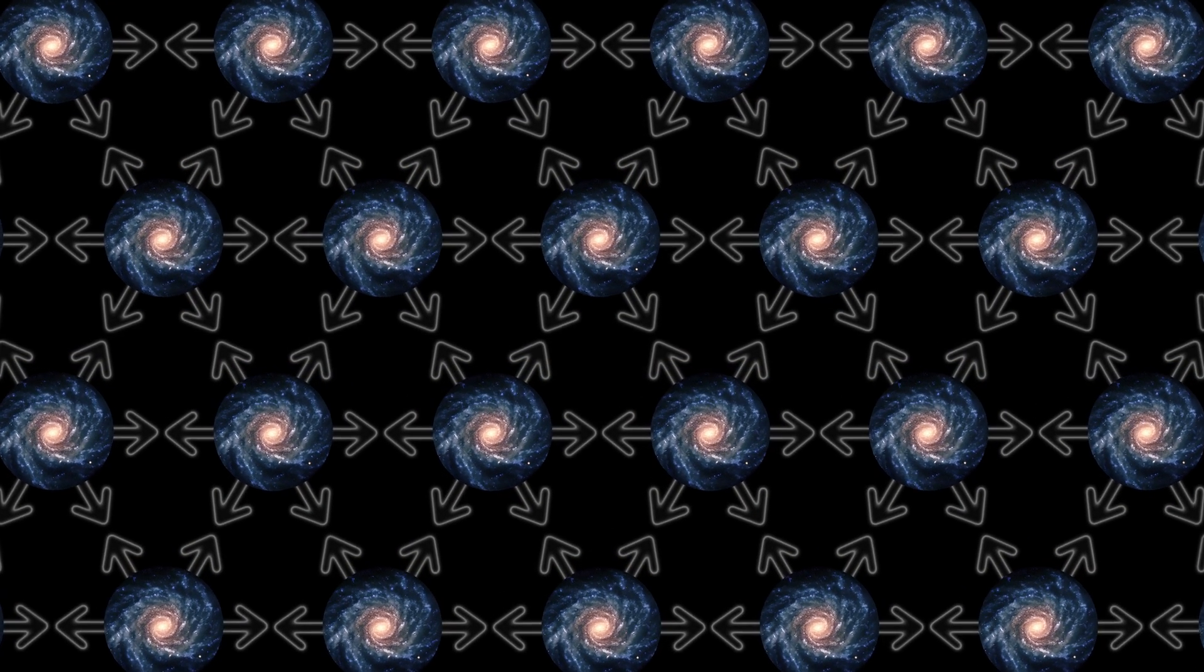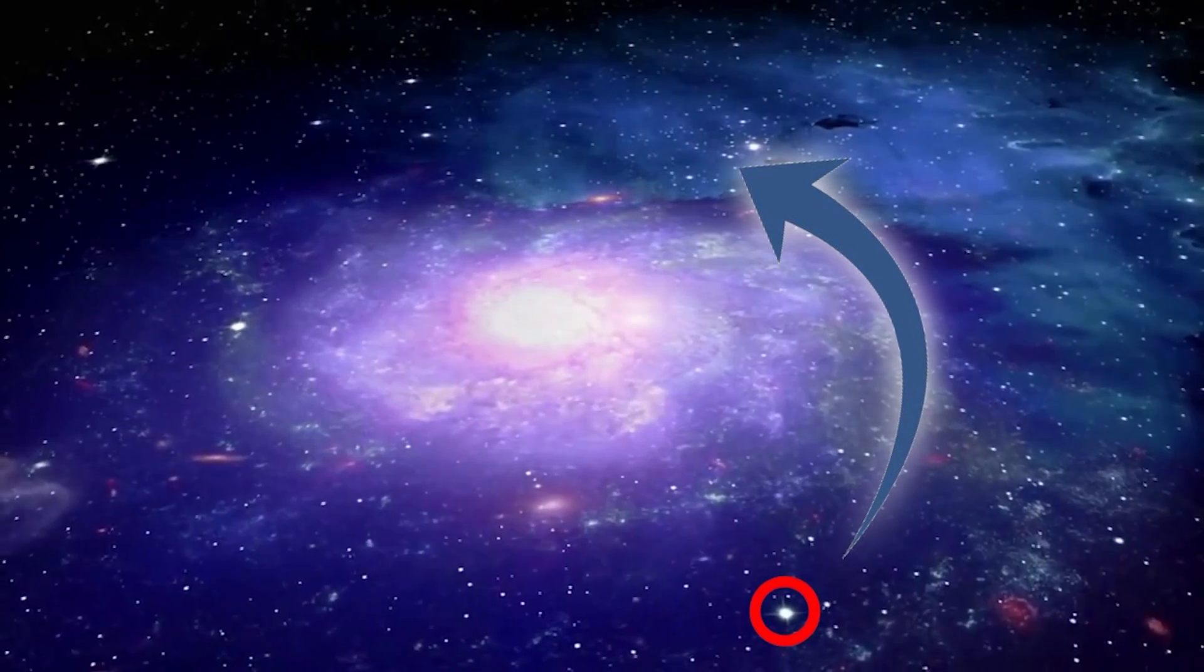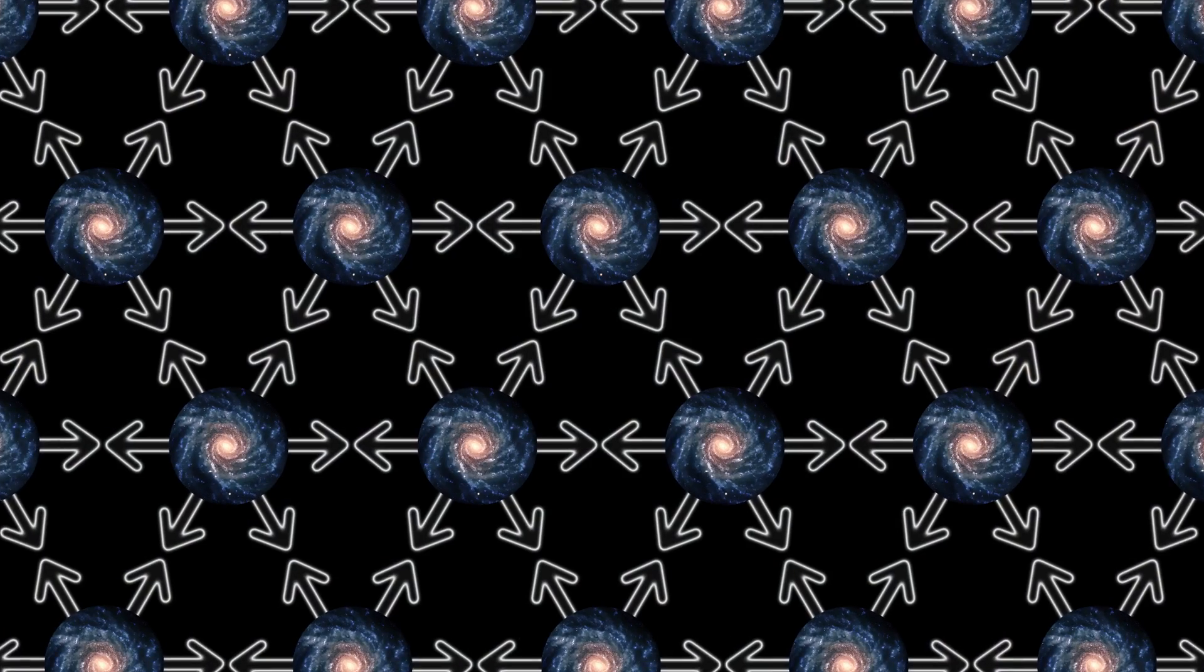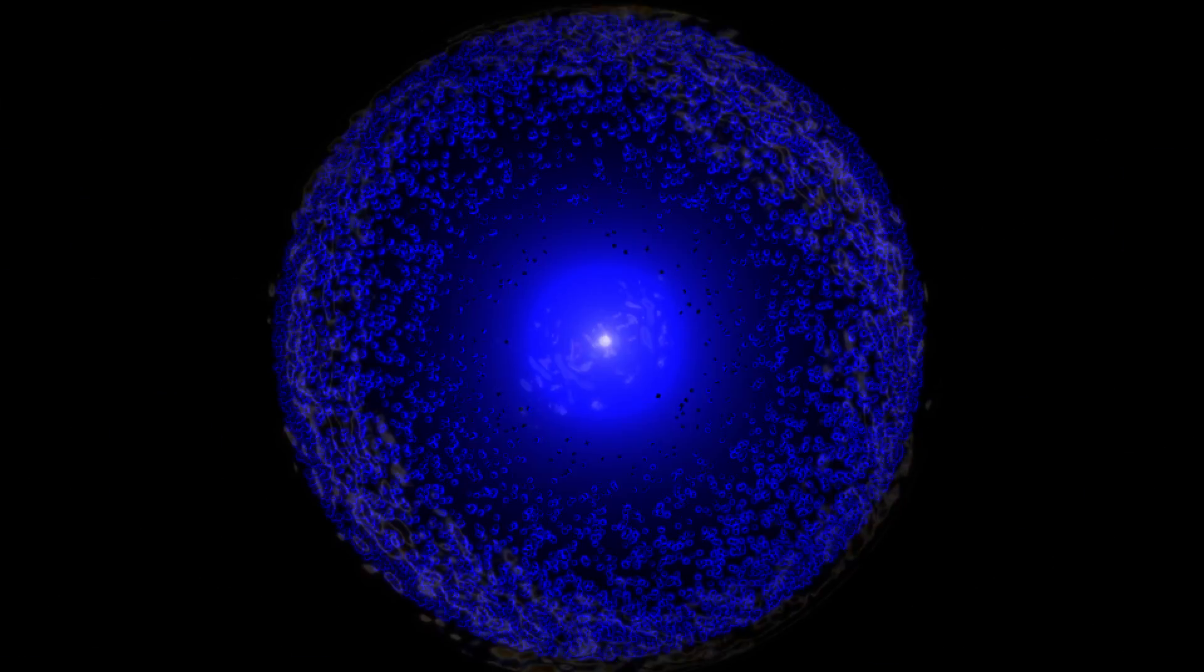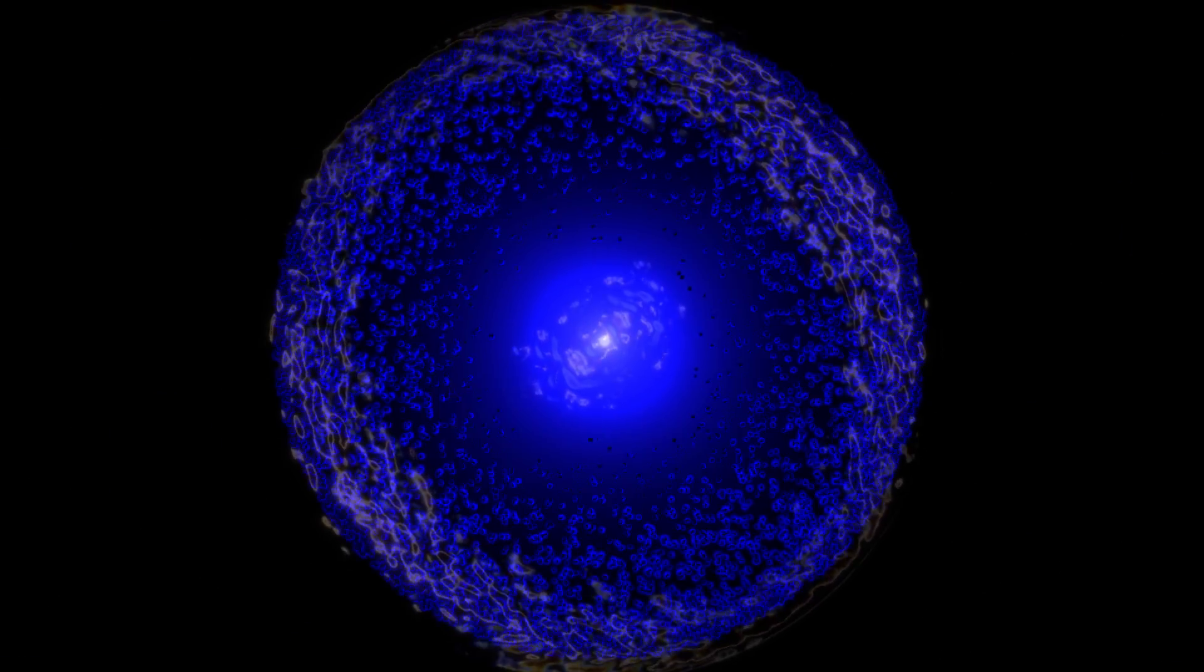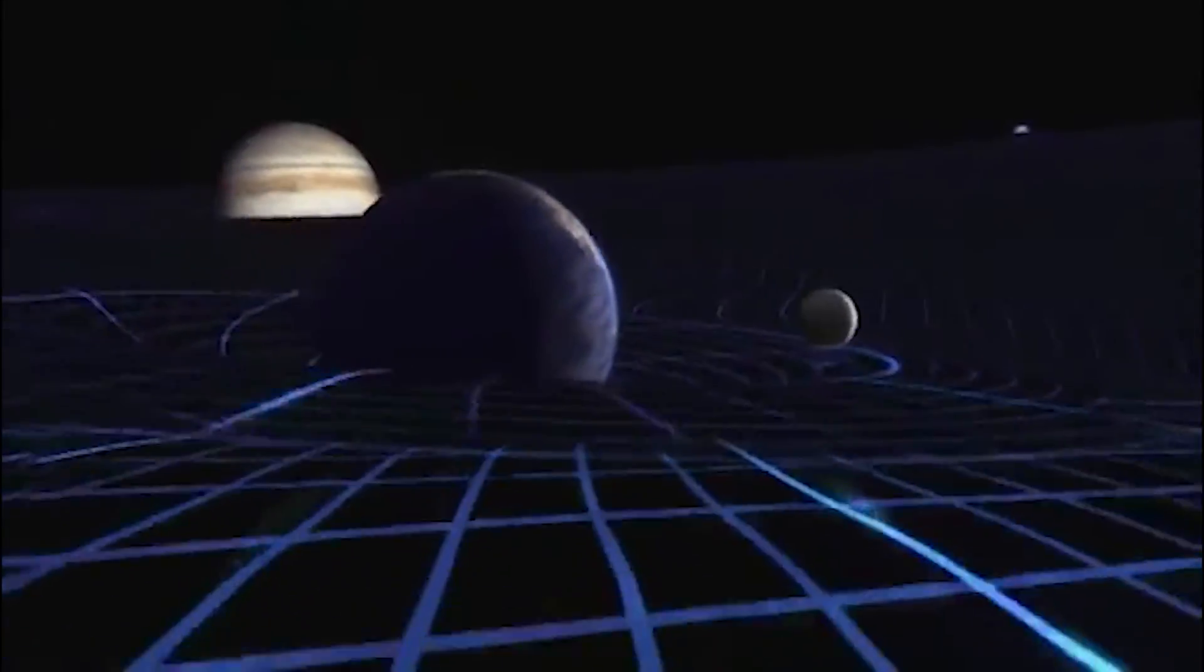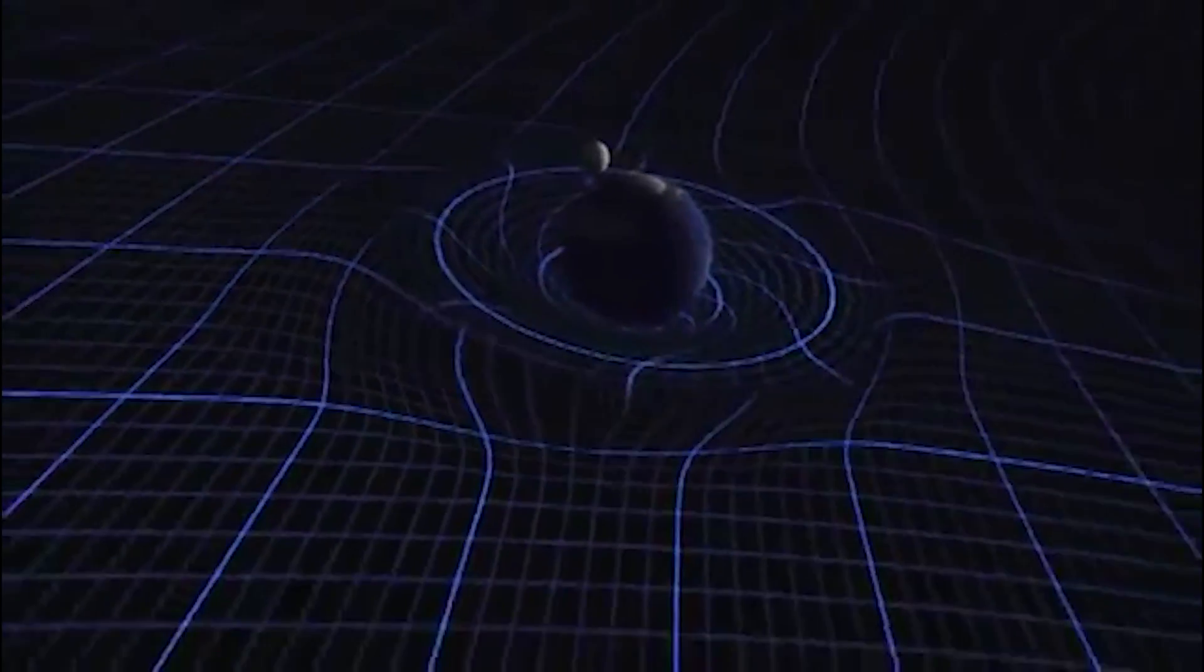For example, this might suggest an alternate explanation for the too fast rotational curves of galaxies, which is currently explained by dark matter. If intergalactic space is able to expand, perhaps galactic space has its own qualities. Maybe it can move independently of the intergalactic space around it. If so, that would just be a larger example of frame dragging, which general relativity allows.